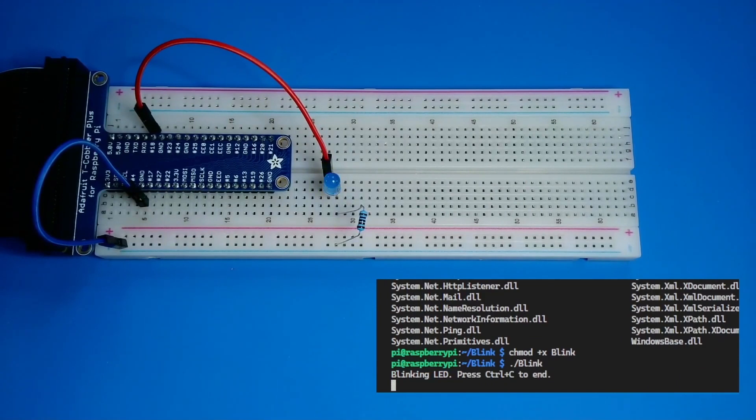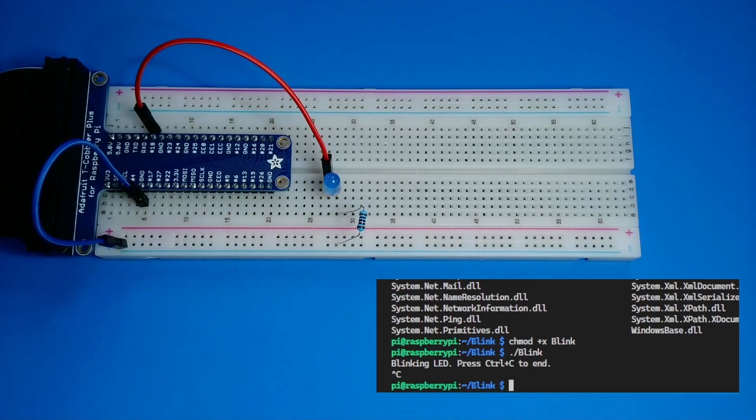It looks like my program is working! GPIO pin 18 is being toggled on and off, and the LED is blinking. After a few seconds, I'll stop the app with CTRL-C.